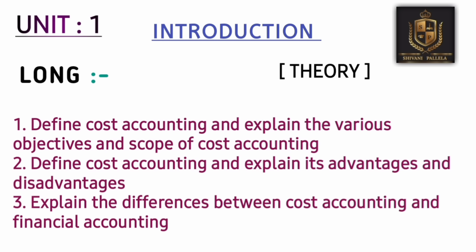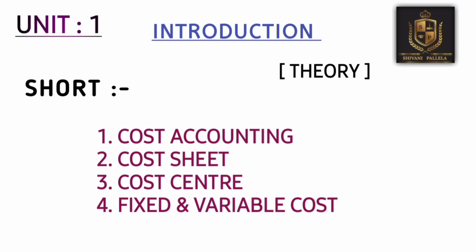Unit one is basically a theory unit. Most of the passing marks we can gain from this unit. I have given only three questions for the long answer. If you are perfect with these three questions, you will definitely attempt one long question of 12 marks and one short question of 4 marks — that's 16 marks from unit one alone. Passing is 32 marks, so half the marks you are scoring from unit one only. The three most important questions are: define cost accounting, explain the scope and objectives of cost accounting, advantages and disadvantages, and differences between cost accounting and financial accounting.